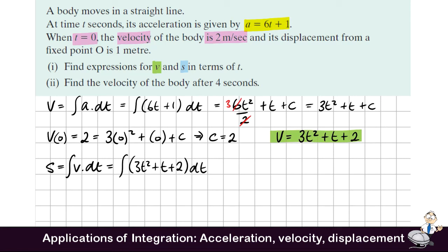Again to integrate this, we're going to raise the power by 1 and divide by the new power. So the first one will be 3t cubed divided by 3. Then we'll have t squared, the integral of 2 is 2t. And again we have a constant of integration.